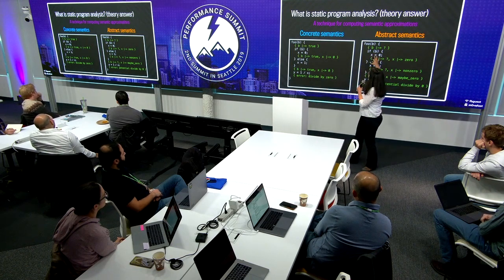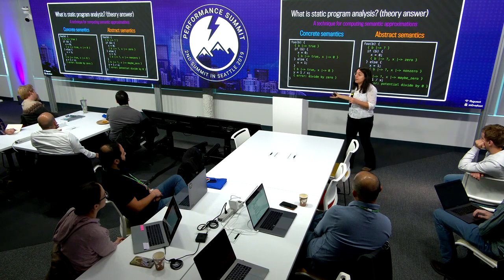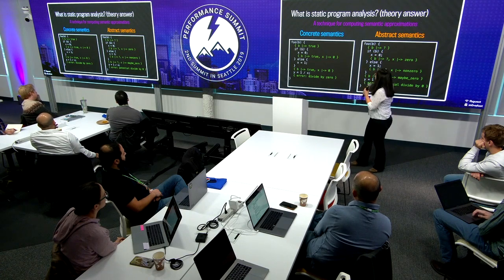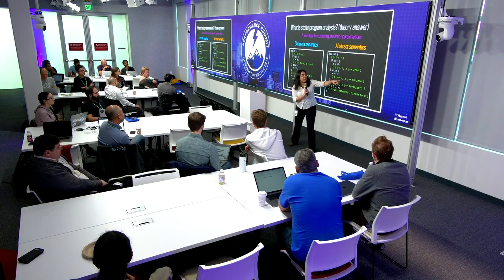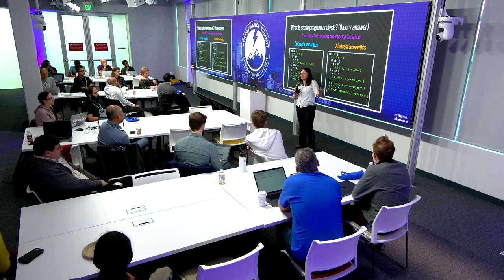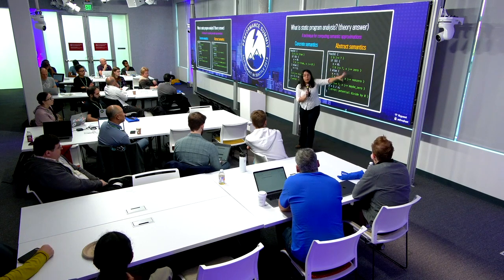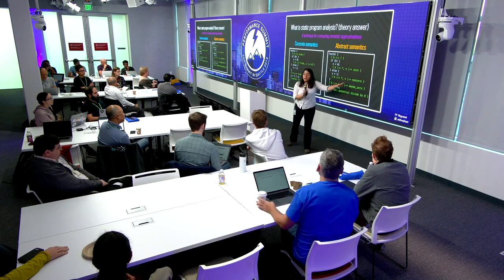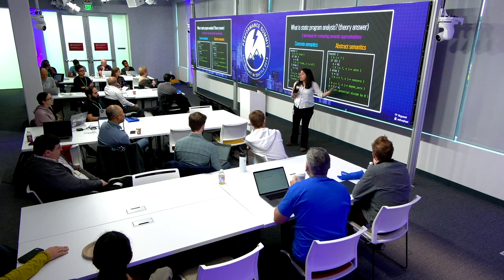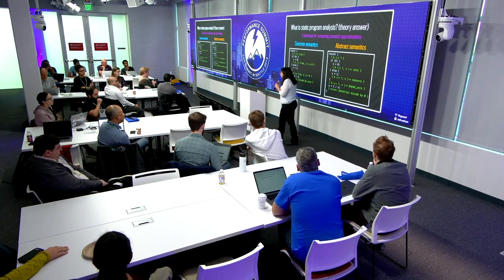So our aim with static analysis is not to run the program, but instead try to semantically approximate it. In this case, we'll say at the beginning: I don't know what B is. The program can take the then or the else branch. In the then branch, X equals zero; in the else branch, X equals one. So X is non-zero in one case. Notice that here I'm doing some approximation — I'm not saying X is zero or X is one. We are over-approximating here, which makes it very scalable. And at the end of the branch, X might be zero — so potentially we might have a divide-by-zero error here.